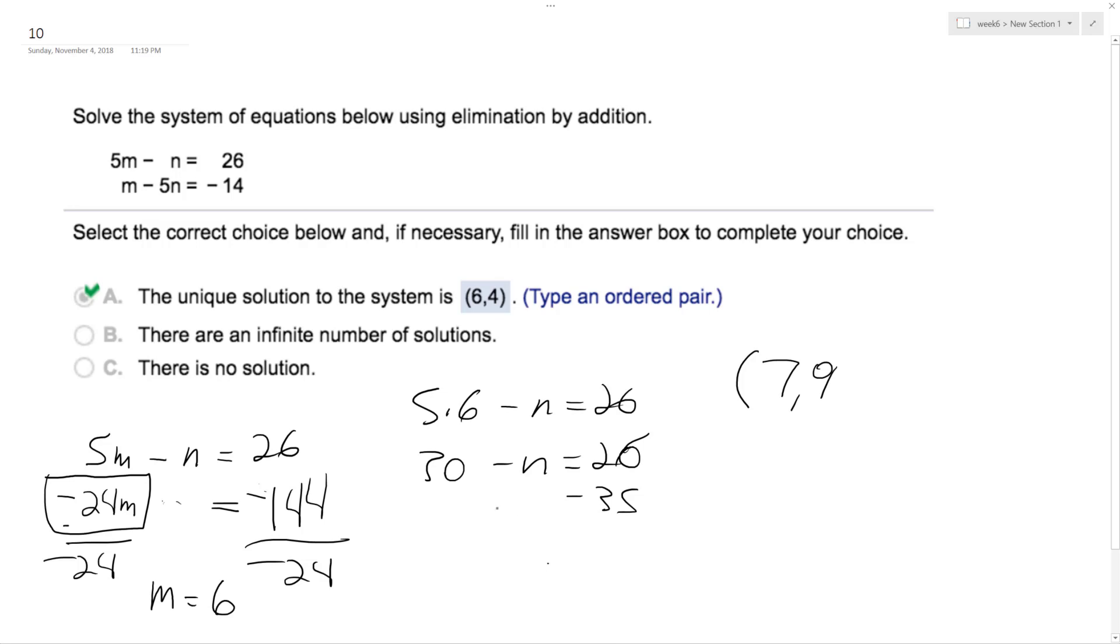So instead this becomes negative n minus 30, which becomes negative 4. Negative n equals negative 4, so n equals 4. So the answer is 6 and 4.